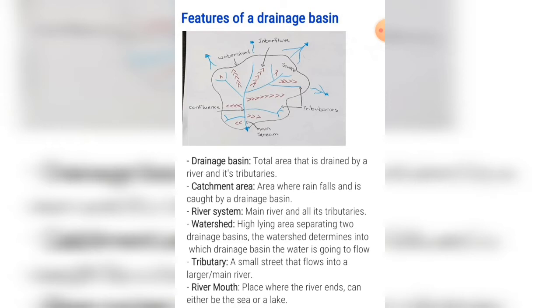The catchment area can be anywhere — it's normally higher up near the source or where the tributaries form — but it can be anywhere. It is just the area where the rainwater is caught by the drainage basin.